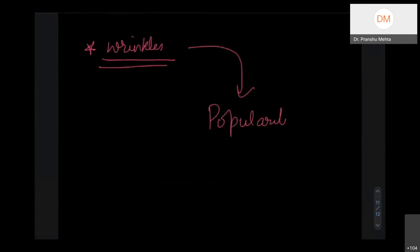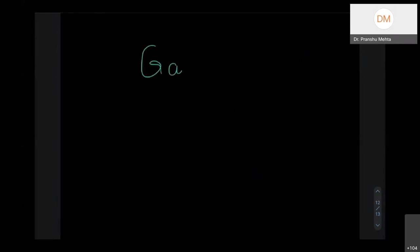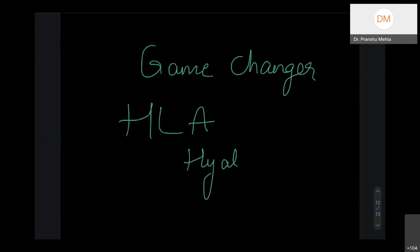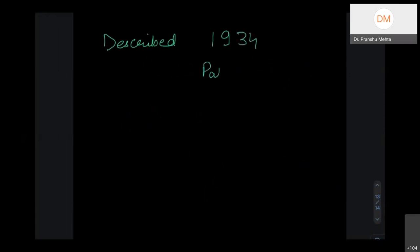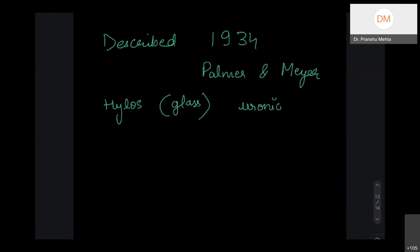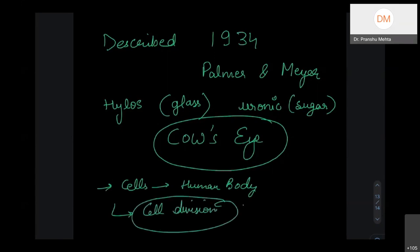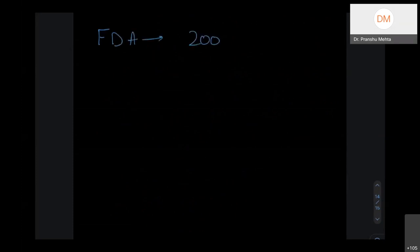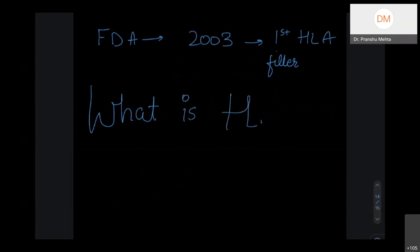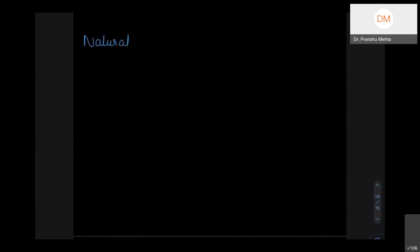Then came the game changer: hyaluronic acid. Hyaluronic acid made facial aesthetics truly popular. It was first described in 1934 by Palmer and Meyer — 'hyalos' meaning glass, and 'uronic acid' referring to the sugar component. Initially derived from cow's eyes, it is present in all cells of the body and plays a major role in cell division. The FDA approved the first hyaluronic acid filler for facial aesthetics in 2003.